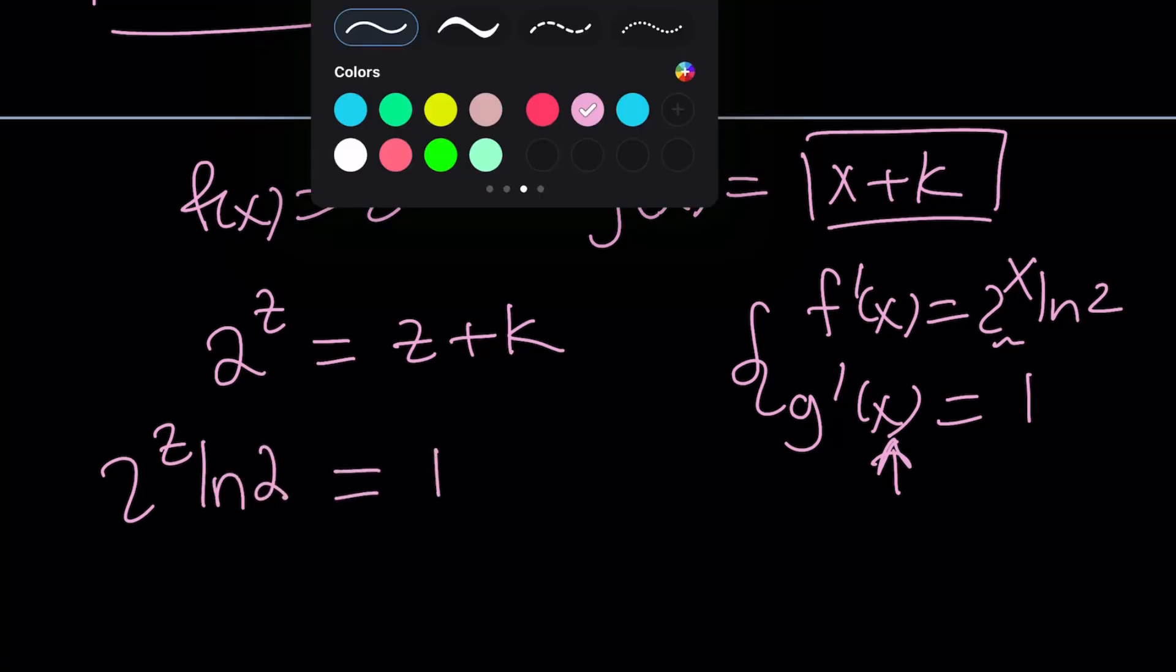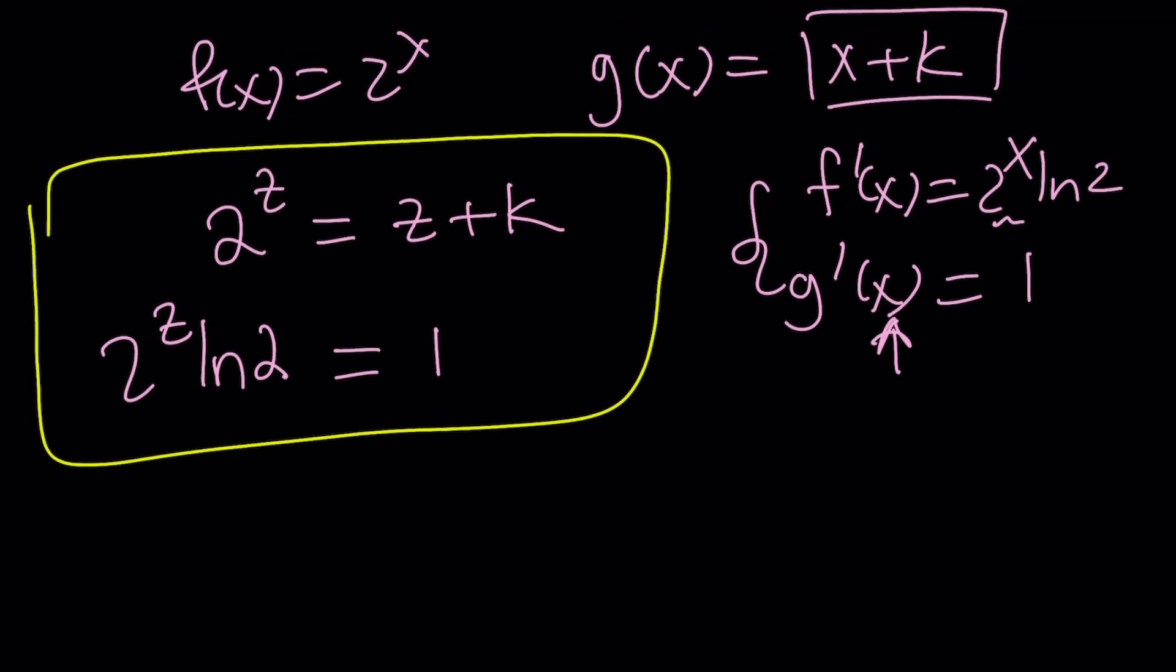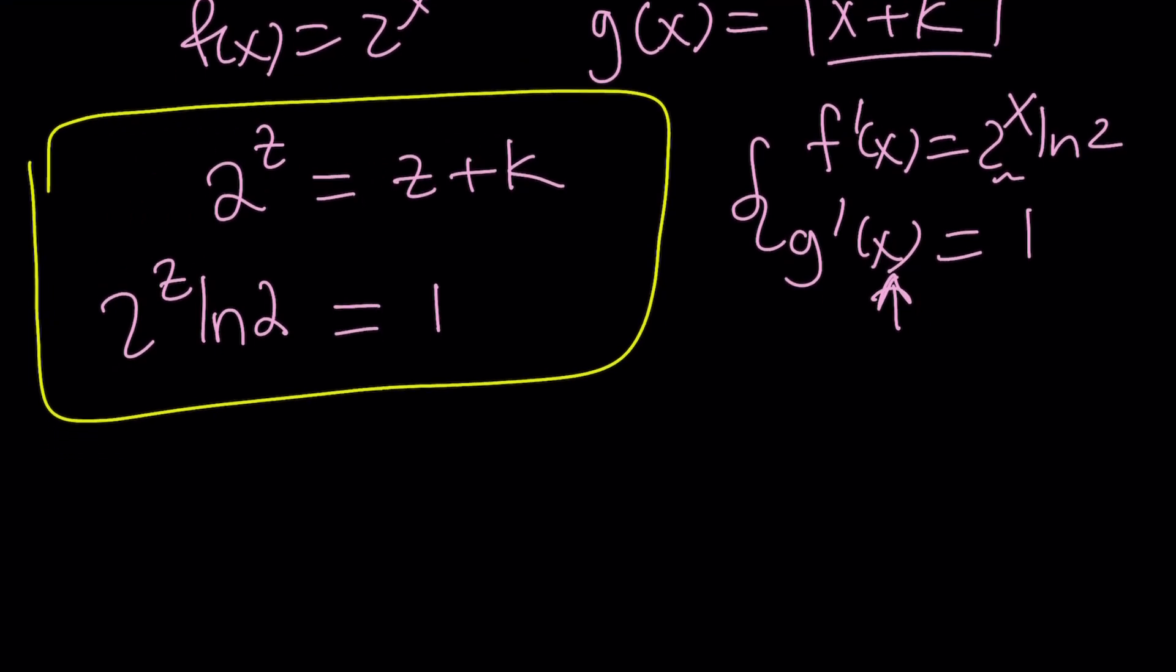So we got ourselves a system of equations which we have to solve. And guess what? I wasn't really expecting to solve this because sometimes these systems are not solvable easily. You don't get a standard equation or you can't express it. But this time it was. And you'll verify it or I'll verify it with you. I'll show you the graph. Anyways, so here's what I'm going to do. From the second equation, I would like to isolate 2 to the power z. 2 to the power z can be written as one over ln 2.